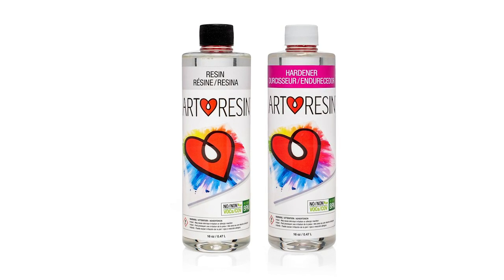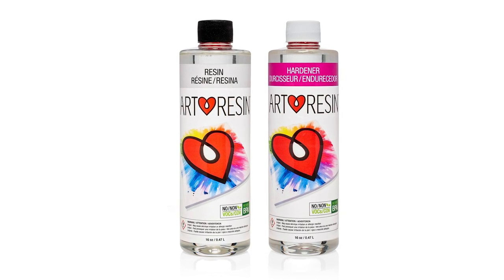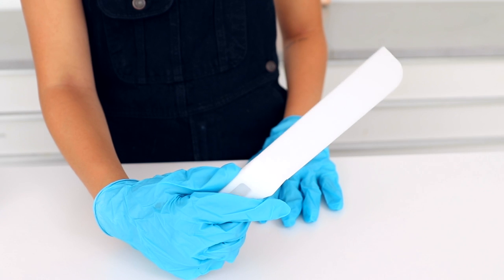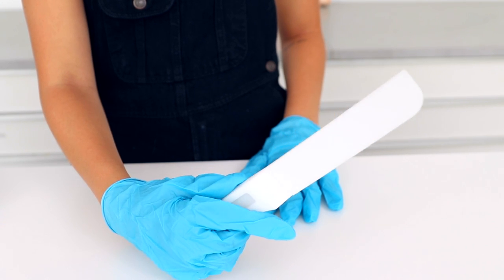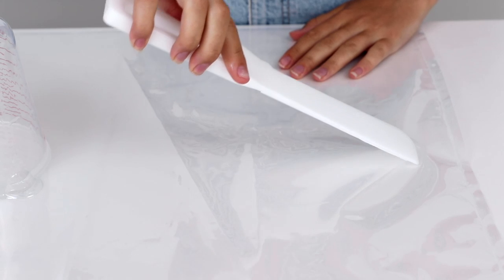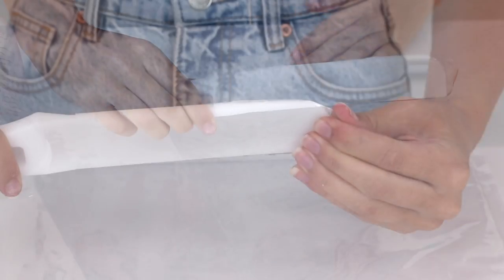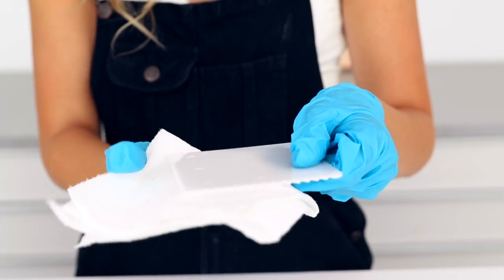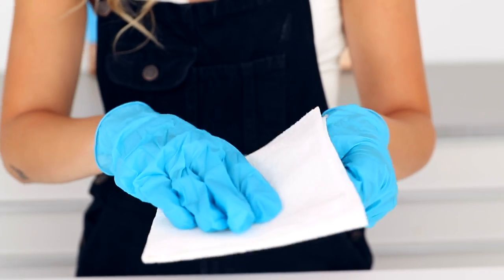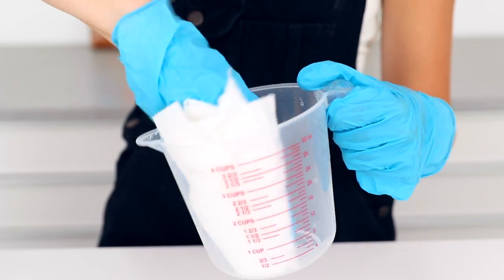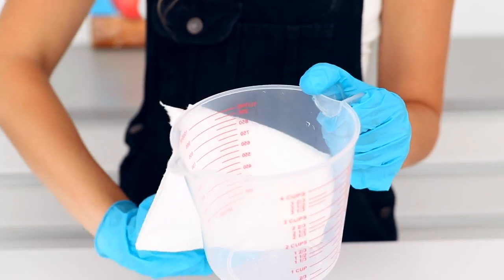Now before we take a look at what you'll need to get started with, there are a couple of things to keep in mind. One, you might notice we recommend plastic tools, and for good reason: resin doesn't adhere to plastic, which makes cleanup a breeze. Two, it's important that your resin tools are both clean and dry. Dirty tools can contaminate your resin and moisture can cause your resin to cure cloudy.